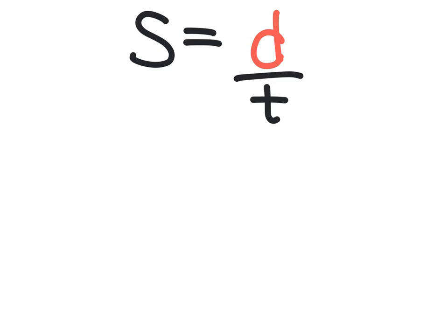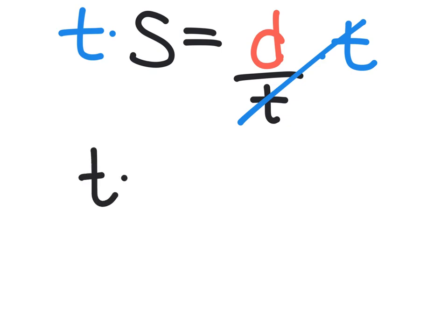The only step we have in this equation is to move time to the left-hand side of the equation. Right now, time is on the bottom — we're dividing distance by time. To move it to the other side, we do the opposite operation, which is multiply by time on both sides. Once we do that, our times on the right-hand side will cancel, and we can rewrite our equation as time times speed equals our distance.